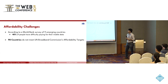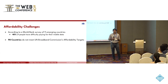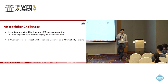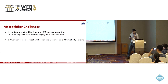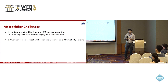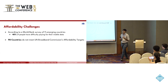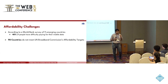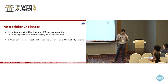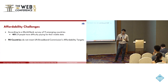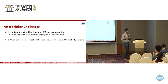Just to hit home this point: a World Bank study across 11 emerging countries found that 48% of respondents had difficulty paying for their mobile data plan. The UN Broadband Commission found that 98 countries do not meet the affordability targets set by the UN — that the price of mobile broadband should be less than 2% of the average income in that country — and 98 countries do not meet that target.